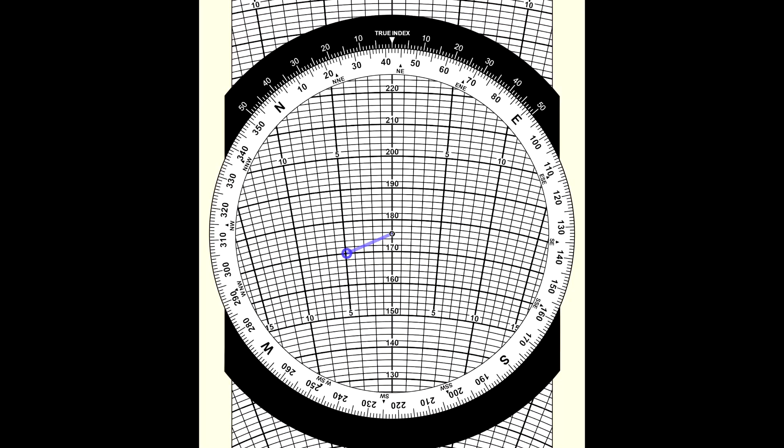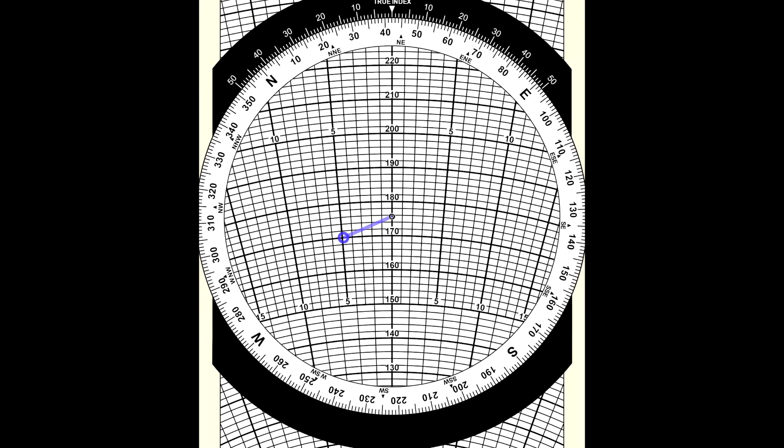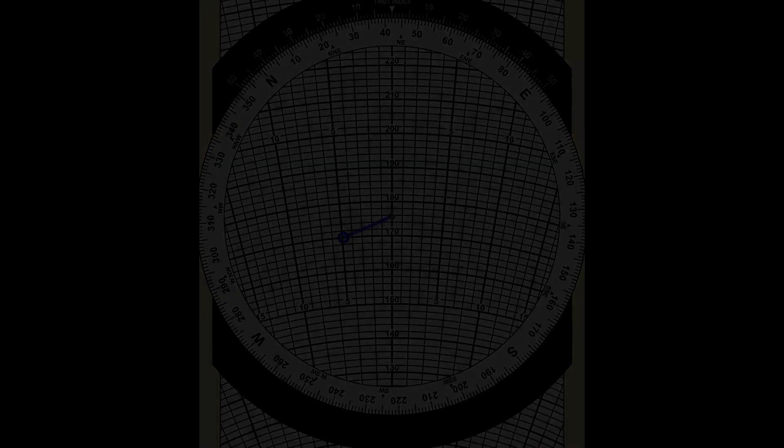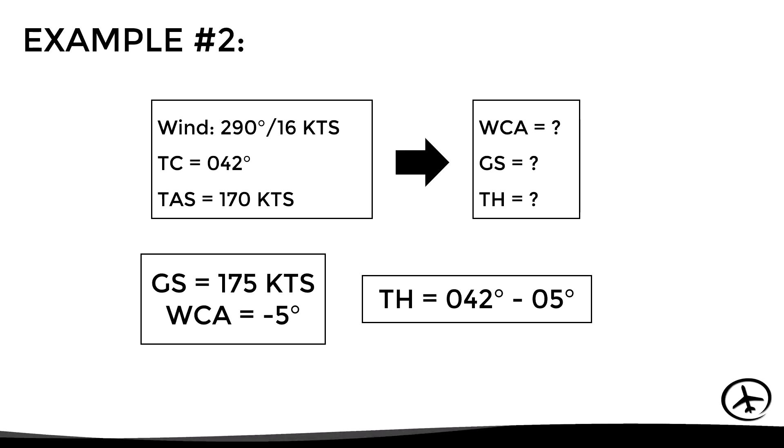Once this is done, we read the ground speed on the grommet, which is around 175 knots, and the wind correction angle on the mark, which is on the 5-degree line to the left of the grommet, meaning a wind correction angle of minus 5 degrees. Adding this to the true course of 042 gives a true heading of 038 degrees.